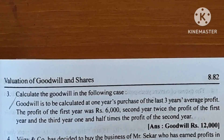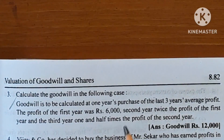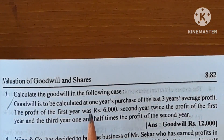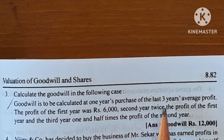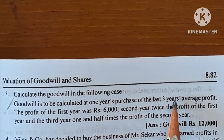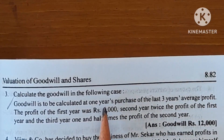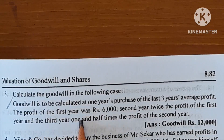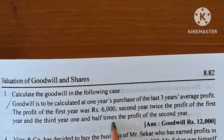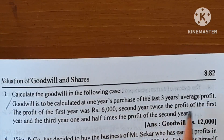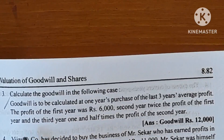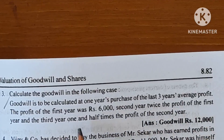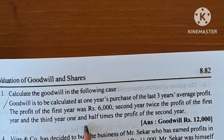We have already uploaded exercises in chapter 3. Calculate the goodwill in the following cases. The goodwill is to be valued at 1 year purchase of the last 3 years average profit. The profit of the first year was $6,000. Second year is twice the profit of the first year. And the third year is one and a half times the profit of the second year.